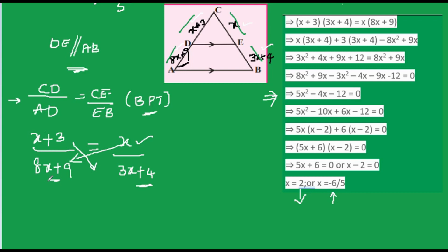CD value is x + 3, AD value is 8x + 9, CE is x, and EB is 3x + 4. Applying the Basic Proportionality Theorem and doing cross multiplication: (x + 3)(3x + 4) = x(8x + 9). After expanding, we get the quadratic equation 5x² – 4x – 12 = 0. Factorizing this gives the values of x as 2 and –6/5.